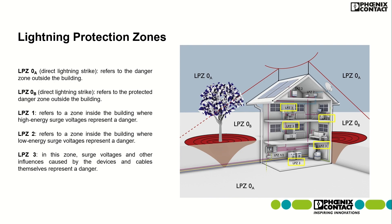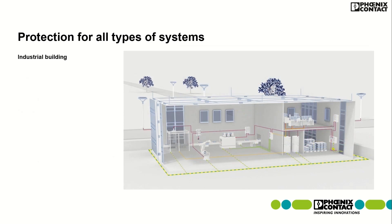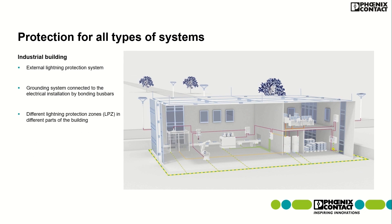Now let's consider an industrial building — a building with an external lightning protection system and grounding system connected to the electrical installation by bonding bus bars. The different lightning protection zones in different parts of the building are shown with color coding.